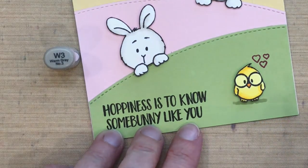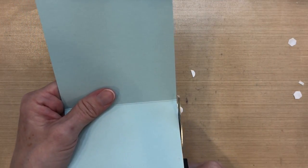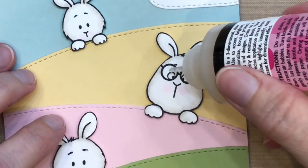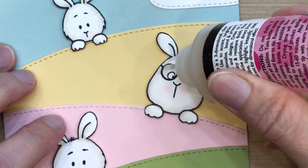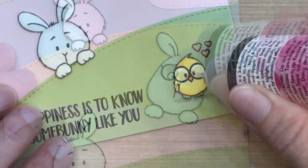So Copic markers actually lighten up quite a bit on colored cardstocks, so I used an extra dark color - that's why I used the W3 instead of the W1. And then finally, two of these characters have glasses, which I absolutely love, so I covered both of them with some Glossy Accents.